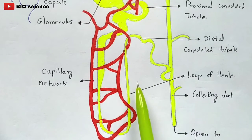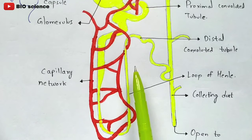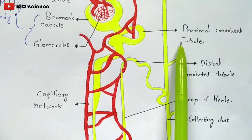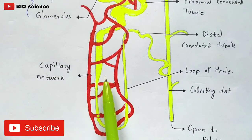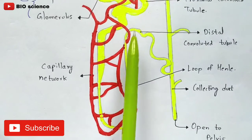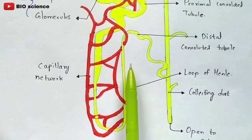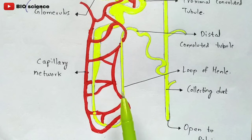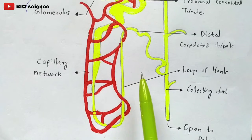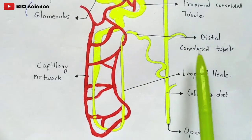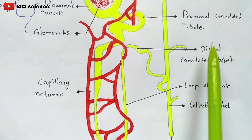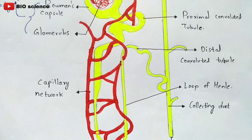This secretion process occurs in the loop of Henle as well as the distal convoluted tubule. One important point: the urine moves from the proximal convoluted tubule into the loop of Henle through a process called osmosis. Tubular secretion can be defined as: a stage of active secretion of waste products by blood capillaries into the urinary tubule. It also occurs in the proximal convoluted tubule but to a lesser extent.